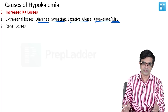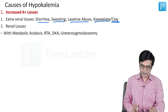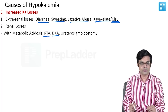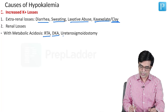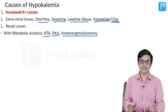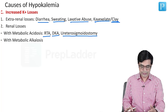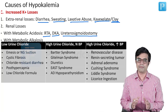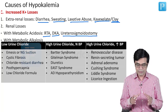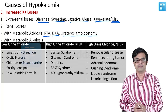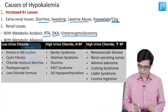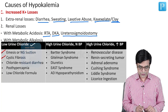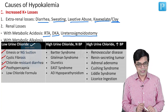Renal losses can be subdivided into multiple types. Renal losses with metabolic acidosis causing hypokalemia include: renal tubular acidosis (both proximal and distal), diabetic ketoacidosis — where total body potassium is also reduced — and ureterosigmoidostomy. With metabolic alkalosis, three categories can be identified. First: metabolic alkalosis with low urinary chloride — seen in vomiting or nasogastric suction, cystic fibrosis, chloride-losing diarrhea, post-hypercapnia, and low-chloride formula.